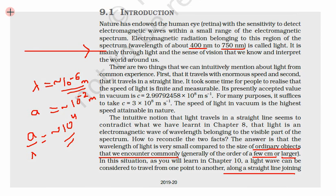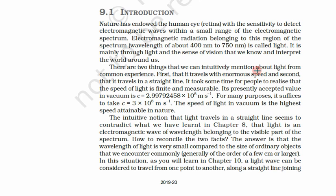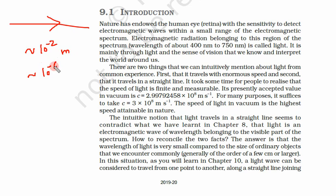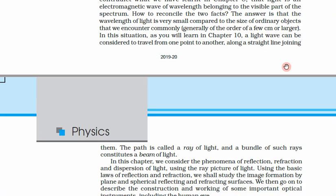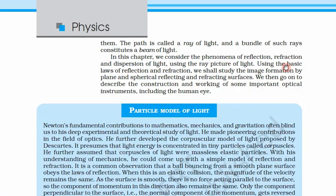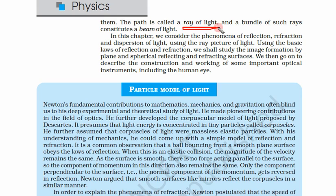For the time being, for understanding this chapter where objects are in centimeters — 10⁻² meters or larger — this approximation, where the wavelength of light is very much less, is quite correct. So we are going to treat light as a ray, meaning light travels in a straight line joining two points. This path is called a ray of light. If we have many such rays, we call them a beam of light.